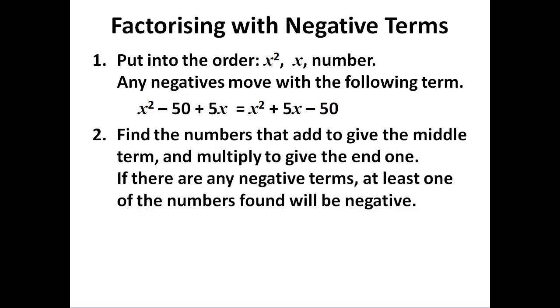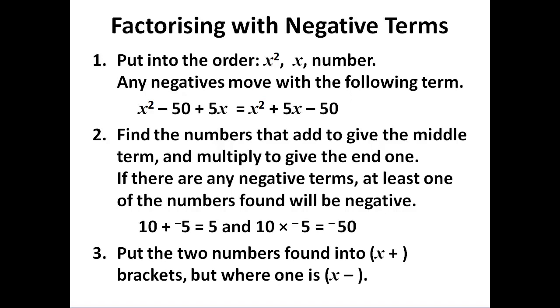In this case, 10 and minus 5 add up to 5 and multiply to give minus 50. So we put them into our x plus brackets, it's just that one of the brackets is x minus.